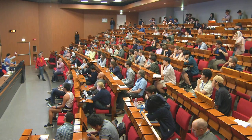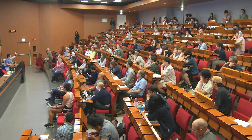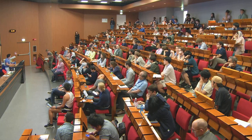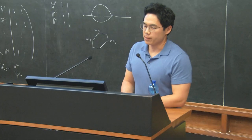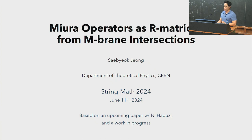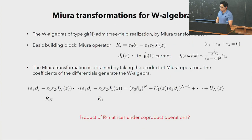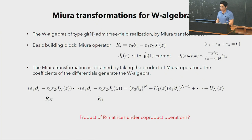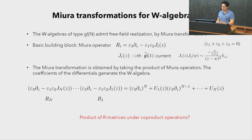We now have Sebiok Jeon from SUNY telling us about mirror operators and membrane intersections. This is joint work with Nathan Haouzi and work in progress. I will explain why mirror operators are related to R-matrices. The mirror operator is a formal differential operator combined with a GL(1) affine GL(1) current; to get the generating currents of the W-algebra you take consecutive products of copies of these.